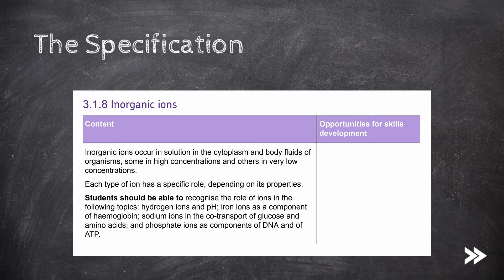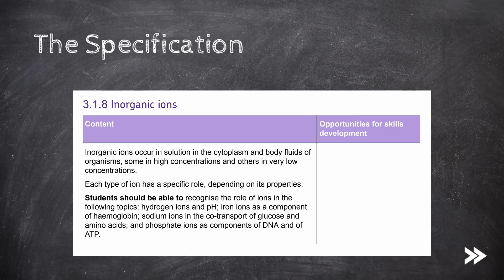Great, that would be our specification covered. We know that inorganic ions occur in solution in the cytoplasm and body fluids of organisms, some in high concentrations and others in very low concentrations. We know that each type of ion has a specific role depending on its properties. Specifically, we have covered the roles of hydrogen ions, iron ions, as well as sodium and phosphate ions.